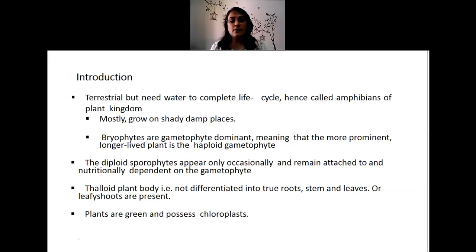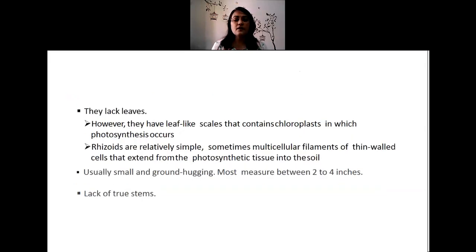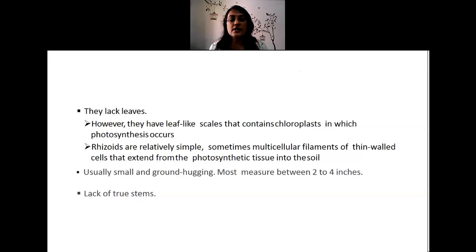The plant body of bryophytes is a thalloid plant body — a thallus that is not differentiated into true roots, stem, or leaves, nor any kind of leafy shoots. Bryophytes lack true stem, roots, and leaves. They have leaf-like scales or leaf-like appendages that contain chloroplasts and are green in color, in which photosynthesis occurs. But true leaves are totally absent in the bryophytes.